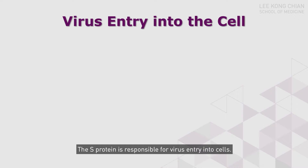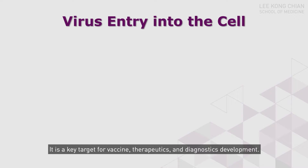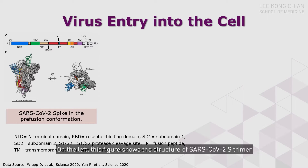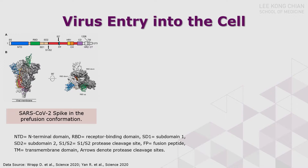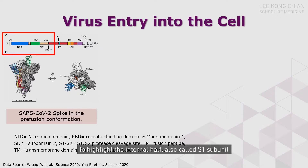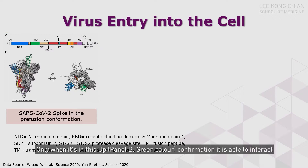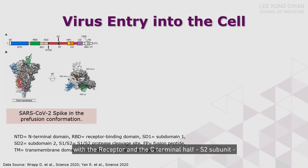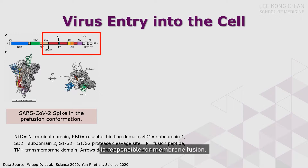The S protein is responsible for virus entry into cells. It is a key target for vaccine, therapeutics, and diagnostic development. On the left, this figure shows the structure of the SARS-CoV-2 S trimer in the pre-fusion conformation, as they appear on the virus surface. The S protein is very large and has multiple domains. The N-terminal half, also called the S1 subunit, contains the receptor binding domain, which is very flexible. Only when it is in the upper open conformation is it able to interact with the receptor. The S2 subunit is responsible for membrane fusion.